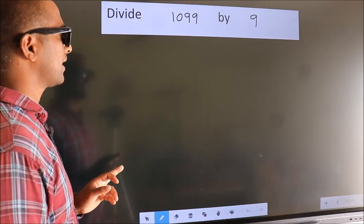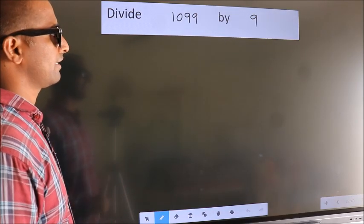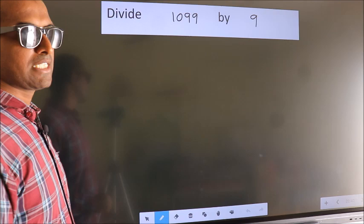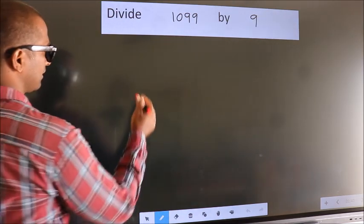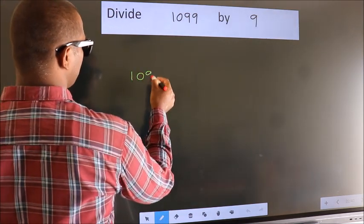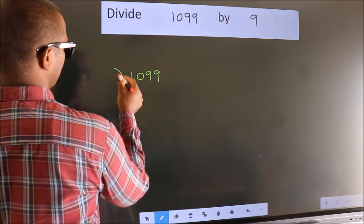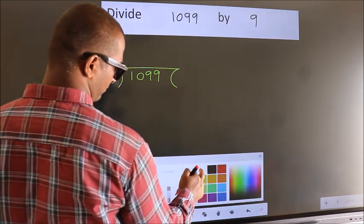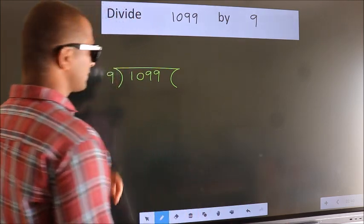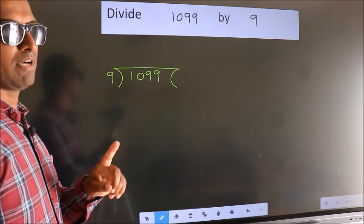Divide 1099 by 9. To do this division, we should frame it in this way: 1099 here, 9 here. This is your step 1.